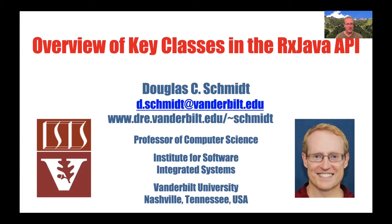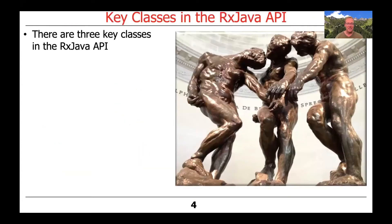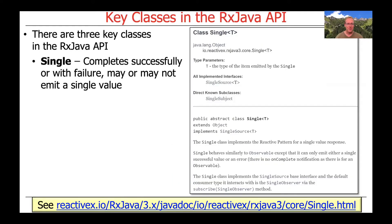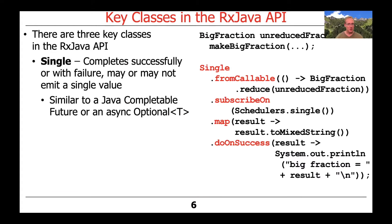Now that we've talked about the key classes in the Project Reactor API, let's take a look at the key classes in the RxJava API. There are three key classes in the RxJava API. The first class is called the Single, which completes successfully or with failure and which may or may not emit a single value. This is very similar to Java's CompletableFuture or to an async optional, or, now that you've been exposed to the Project Reactor API, it's somewhat similar to the Mono class in Project Reactor. We'll talk a lot about this later and show many of its operations and how you can use it in practice.